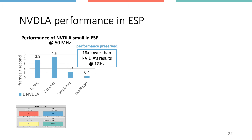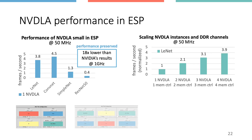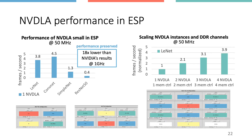Results on FPGA show that the performance of NVDLA-small in ESP is comparable to what NVIDIA reports for ASIC, after scaling to account for different clock frequencies. The agile third-party flow enabled seamless instantiation of more NVDLA tiles, proving that performance scales almost linearly when scaling the number of memory tiles. To implement three FPGA prototypes for three ESP instances, we simply created three different configuration files and let FPGA implementation run.